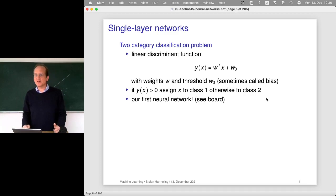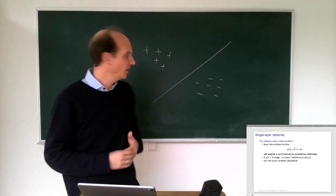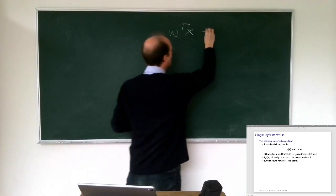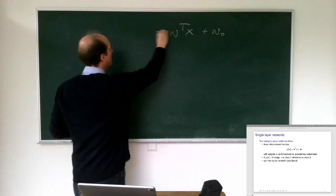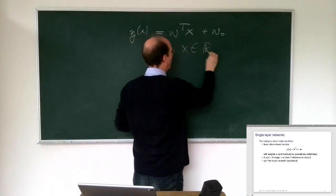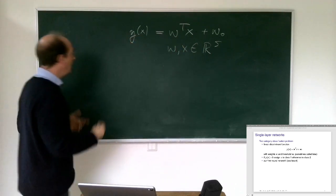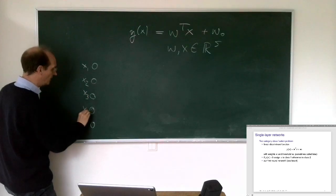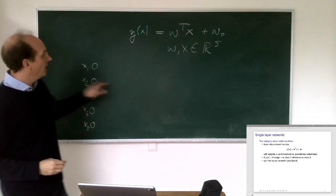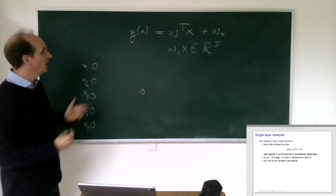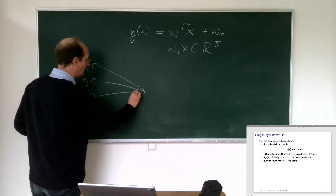So how is this simple equation already a neural network? These networks are always kinds of graphs. Our neural network computes W transpose X plus some W zero, which we call Y of X. Let's say X is in R to the five - that means W is also in R to the five. For each component of X we draw one node, and then the output will be another node. All of the X's are involved, so we draw arrows towards the output. The W's are basically weights that we put onto these arrows.